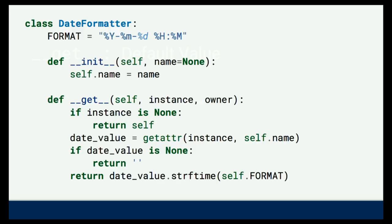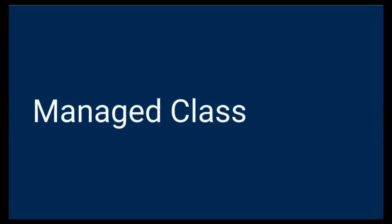I'm going to create an object called `DateFormatter`, which is going to format a datetime into a string. This is what defines this class to be a descriptor, because it implements one of the methods of the descriptor protocol. `__get__` takes two parameters: the instance, which is the object being accessed at that time, and the owner, which is a reference to the class. In that method, I get the attribute for that object and return a string representation of that datetime.